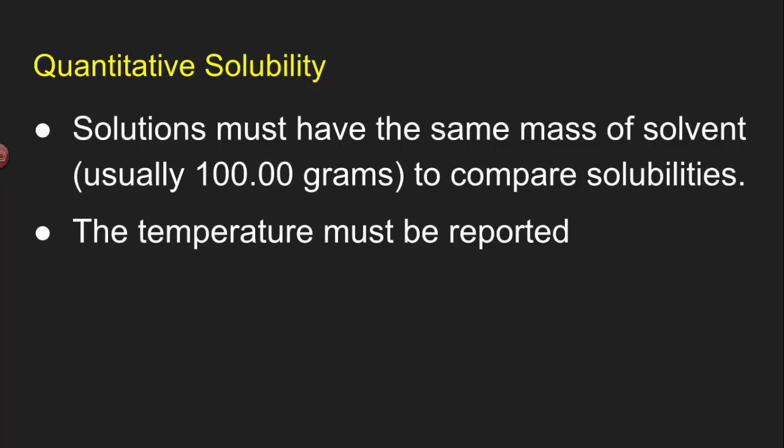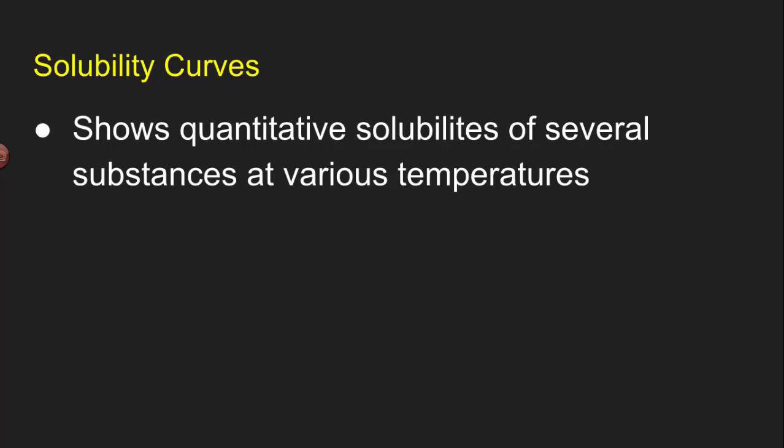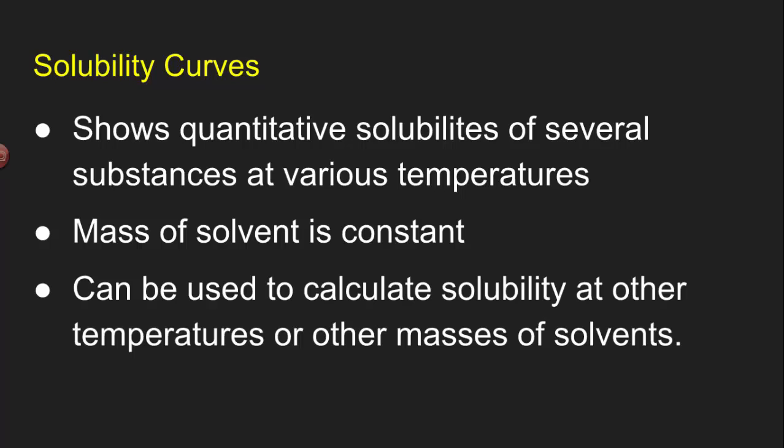The temperature has to be reported because as I just said a little while ago, as the temperature goes up, more solute can dissolve for solids and vice versa. So I need to know what temperature I'm at so I can tell if this is very soluble or not soluble at all. The way that I can represent this in a visual way is using something called a solubility curve. This is a graph. It's a graph that shows quantitative solubilities of different substances at various temperatures. They're called solubility curves because the lines are actually curved. Because we're trying to compare different substances at different temperatures, we need to keep the mass of solvent constant. And that means the mass of solvent is almost always 100 grams. That's the standard for solubility. And then I can use these curves to calculate solubilities at other temperatures or other masses of solvents. And we'll learn how to do that in class. So let's take a look at the solubility curve and you'll see what it looks like.